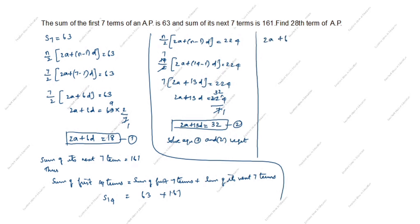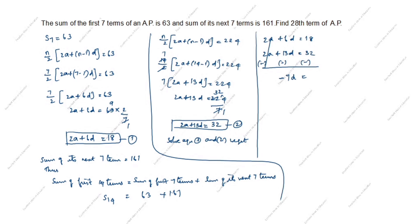Subtracting equation 1 from equation 2: (2a + 13d) minus (2a + 6d) equals 32 minus 18. The 2a terms cancel. 13d minus 6d is 7d. 32 minus 18 is 14. So 7d = 14, giving d = 2.